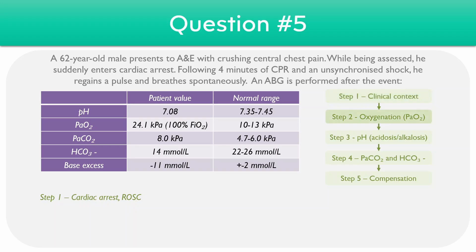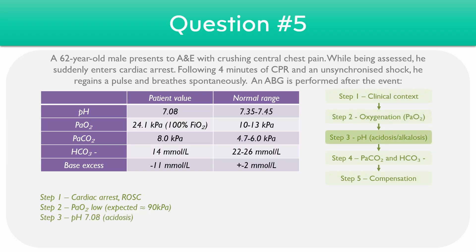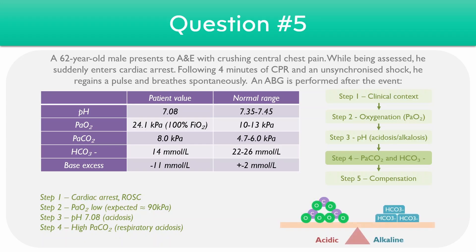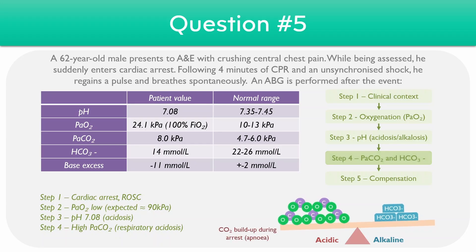Taking a look at the oxygen levels, the PaO2 is 24.1, which looks above the normal range, but the patient has been placed on high flow oxygen. We would expect the PaO2 to be around 100 minus 10, or 90 kPa, so it's quite a lot lower than expected. Turning towards step three, the patient is quite significantly acidotic with a pH of 7.08. Looking at the CO2, it's 8 kPa, so there's an element of respiratory acidosis present. The patient wasn't breathing for at least four minutes during the CPR, resulting in a massive buildup of CO2, which has shifted the scale towards the acidic side.